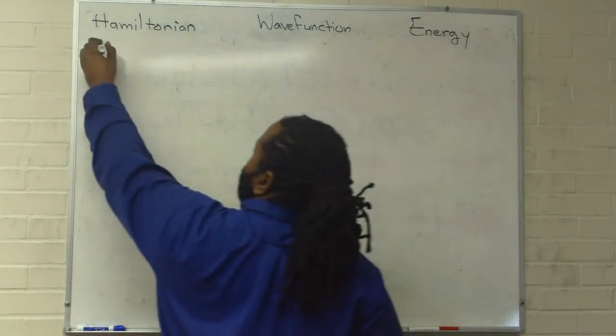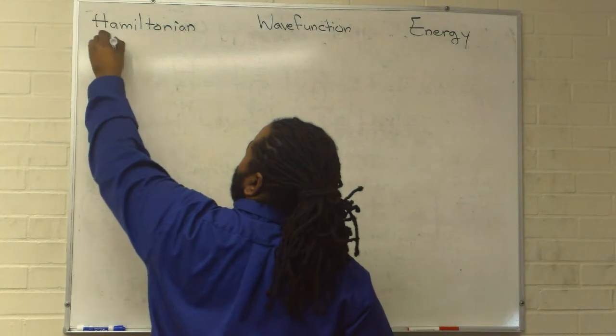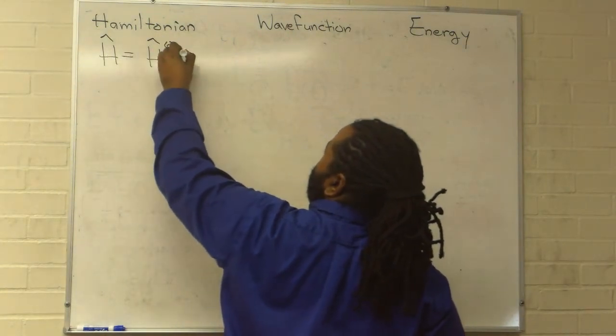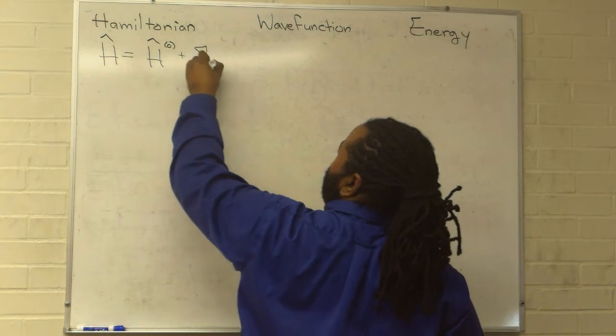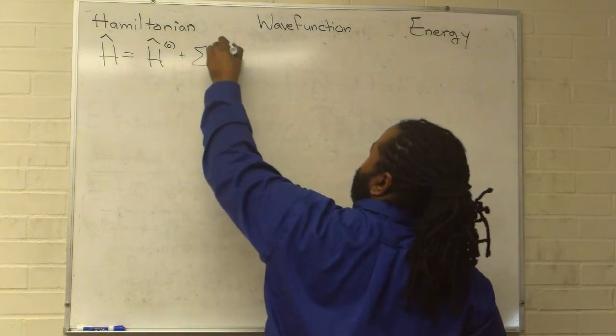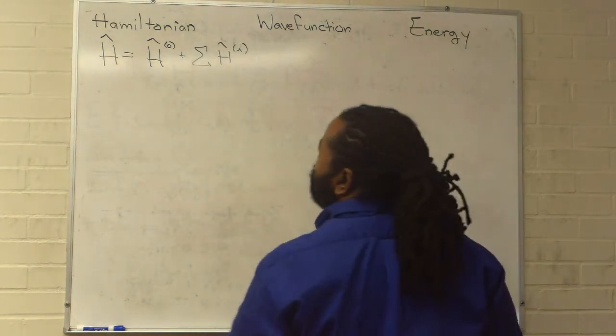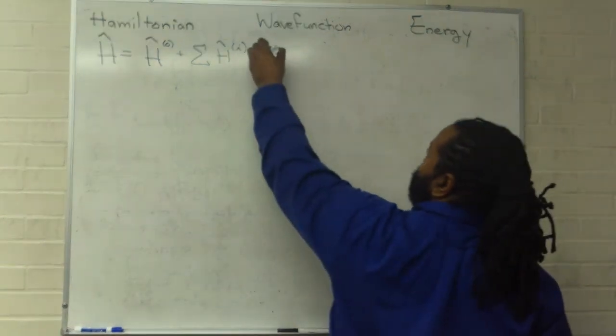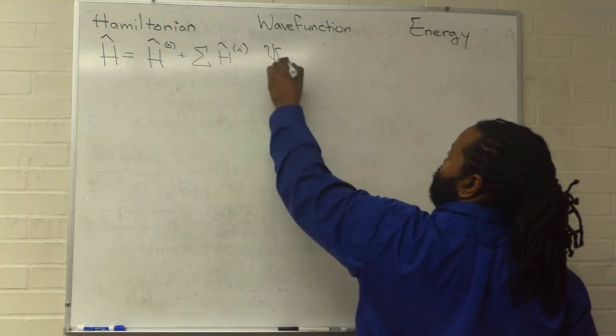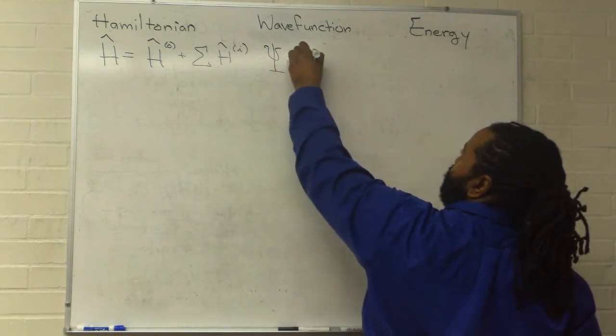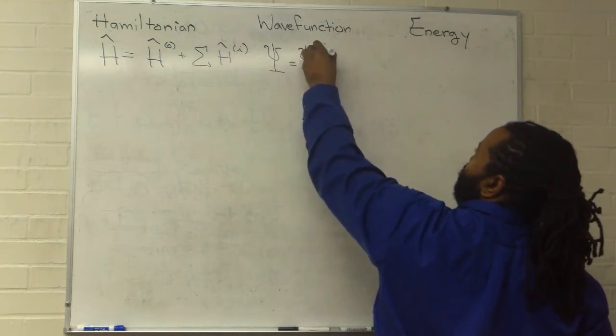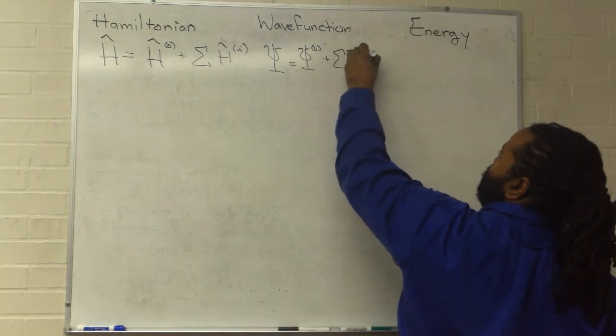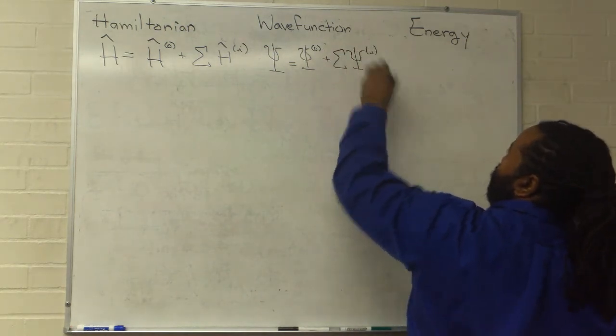So we can write out this true Hamiltonian as the model Hamiltonian plus a bunch of other ones. We can write out our wave function solution in the same way, where our true wave function takes the model solution and incorporates any of a number of corrections.